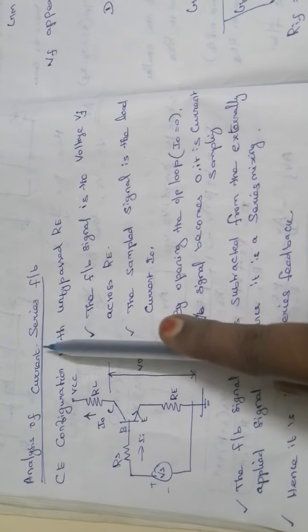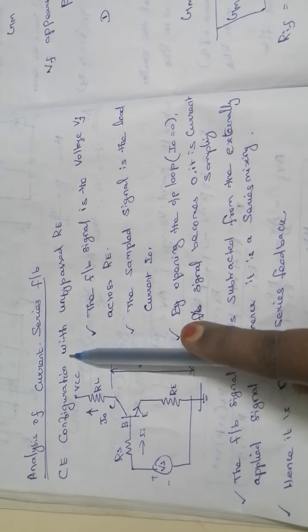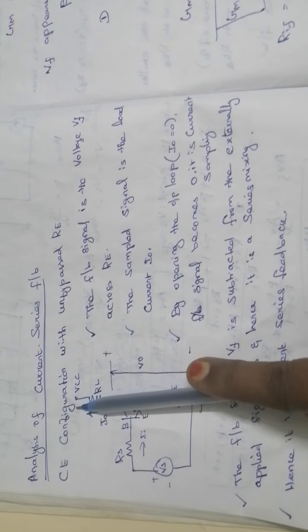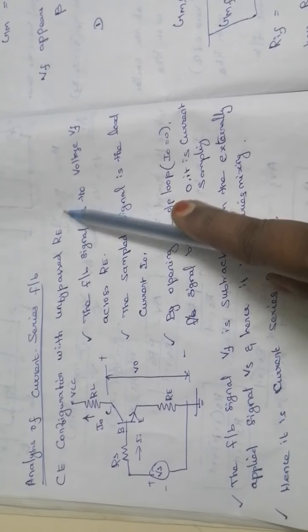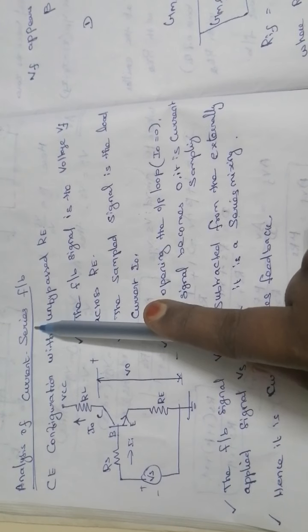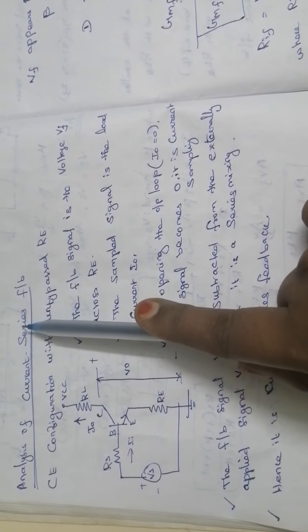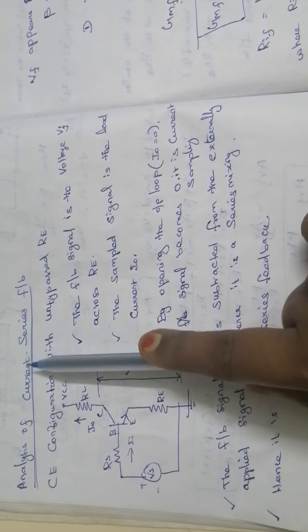Dear students, the next topic is analysis of current series feedback. For current series feedback we are using the configuration of common emitter with unbypassed Re. In this video I just informed the name — it is current series — but in an exam pattern they don't mention current series feedback; they directly give the circuit diagram.